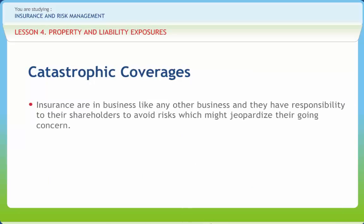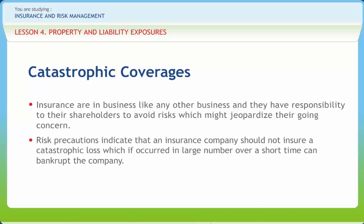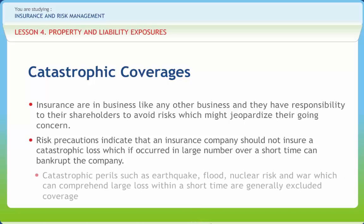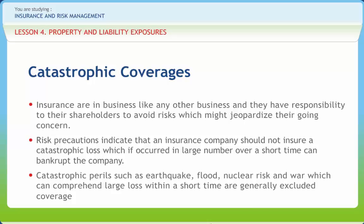Insurers are in the business like any other business and they have responsibility to their shareholders to avoid risk which might jeopardize their going concern. Risk precautions indicate that an insurance company should not insure a catastrophic loss which, if occurred in large number over a short time, can bankrupt the company. Catastrophic perils such as earthquake, flood, nuclear risk and war which can comprehend large loss within a short time are generally excluded from coverage. Because of chances of risk occurrence affecting lives of many, insurance companies and the government have stepped up to provide coverage for catastrophic risk. The endorsement serves well in areas with high chances of mudslide and earth movement, and coverage is essential in areas with possibility of earth sinking because of filled old land mines.